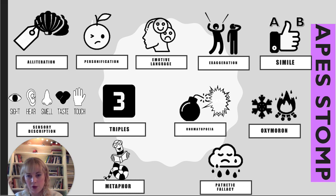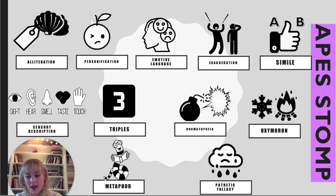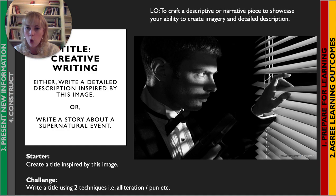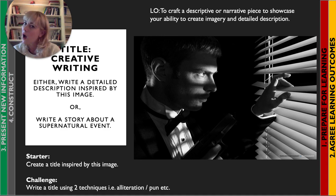Those are your techniques — the things I'm looking for you to try and develop and include in your creative writing. If you're keen to demonstrate you understand these and can use them, pause the video now and plan out at least five of these in full sentences that you could use to answer your question. So you're either writing a detailed description inspired by that crime-spy genre image — the man who looks as if he's waiting for some sort of event — or writing a story about a supernatural event. Look at the APESOMP techniques and plan out five sentences you could embed in your creative writing.